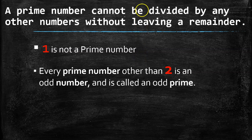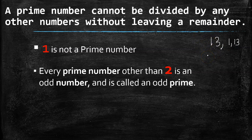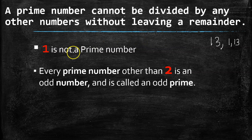A prime number can only be divided by 1 and itself without leaving a remainder. Any number that can be divided by other numbers is not a prime. So 1 is not a prime number — it has only one factor.